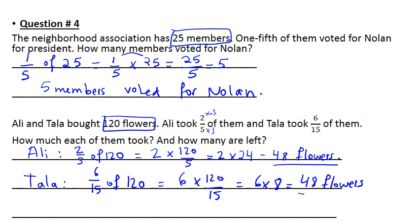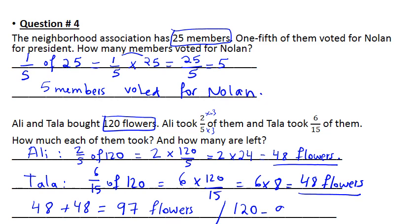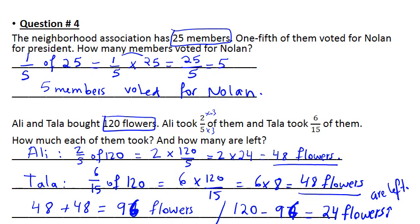Now I need to know how many flowers are left. First, 48 plus 48 is 96 flowers are taken. So the flowers that are left are 120 minus 96, which is 24 flowers. Let us write the answer — that's it.